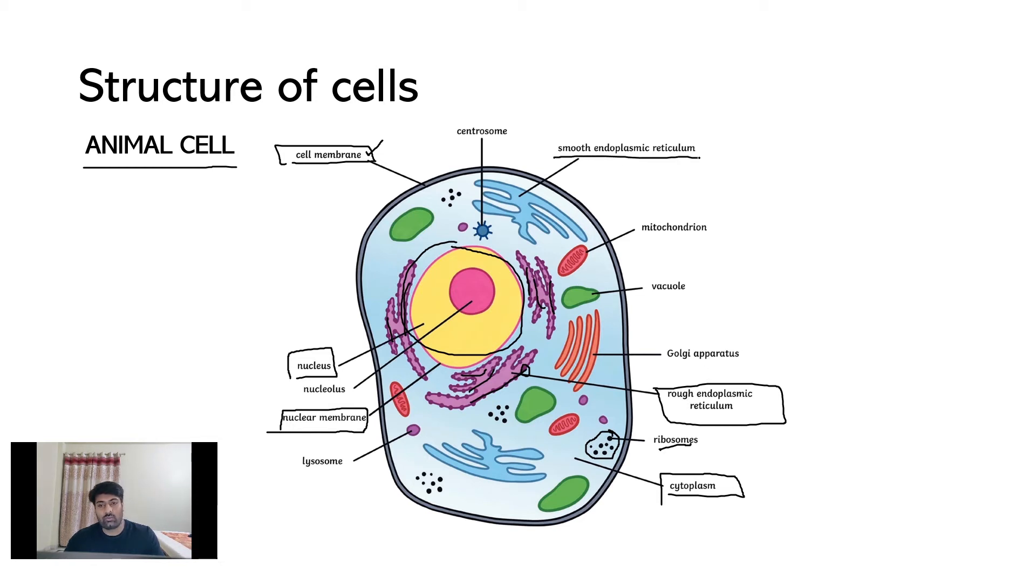After the rough endoplasmic reticulum, smooth endoplasmic reticulum can also be seen in the image. Alongside smooth endoplasmic reticulum, we can see mitochondria.